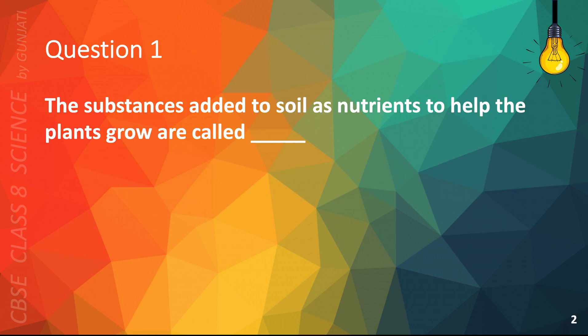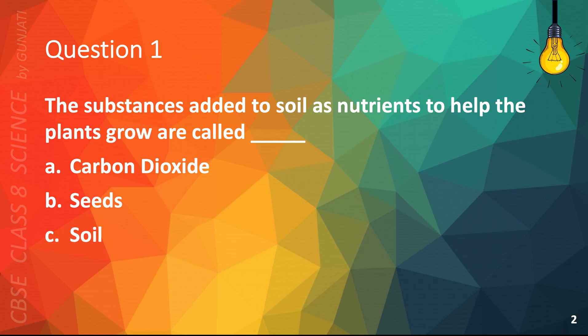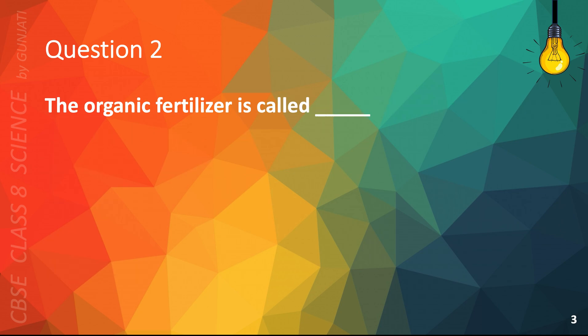Question 1. The substances added to soil as nutrients to help the plants grow are called: A. Carbon Dioxide, B. Seeds, C. Soil, or D. Fertilizers. The correct answer is D. Fertilizers.